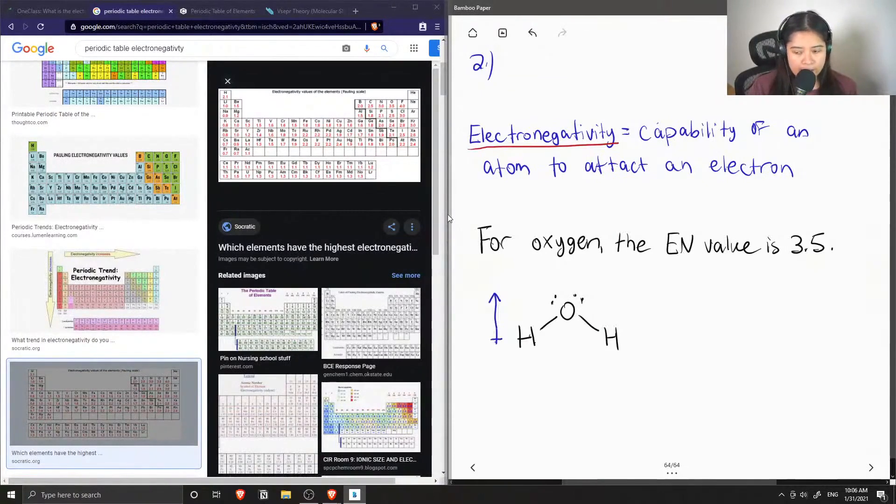And oxygen, since it pulls the electrons more than the hydrogen, there's an uneven sharing of electrons. So this causes a partially negative side of water, and the hydrogens being partially positive.